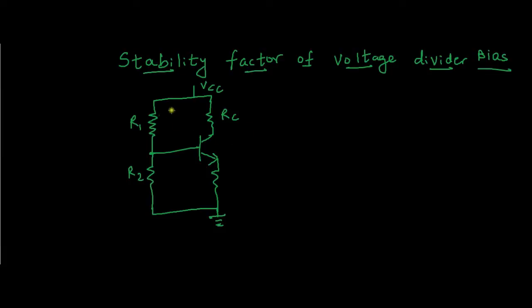As you can see, the voltage is divided between R1 and R2 and that is being applied to the BJT. We are familiar with the pattern of how to get a stability factor, so we will straight away move to that part.